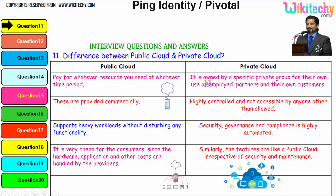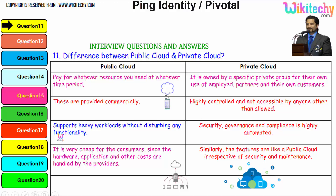The private cloud is owned by a specific private group for the use of employees, partners, and their own customers. It is highly controlled and not accessible to anyone other than those allowed. It supports heavy workloads without disturbing any functionality. Security, governance, and compliance are highly automated. Public cloud is very cheap for consumers since hardware, application, and other costs are handled by the providers.